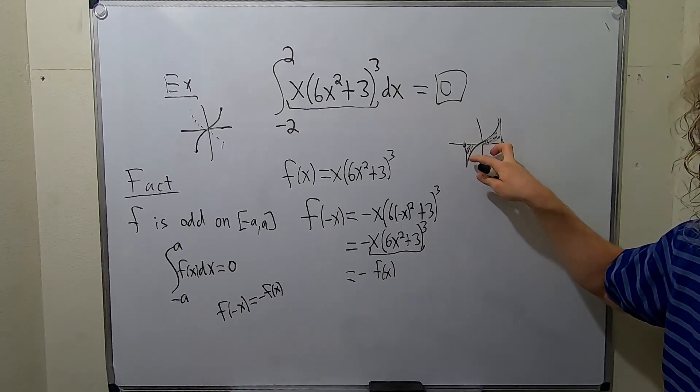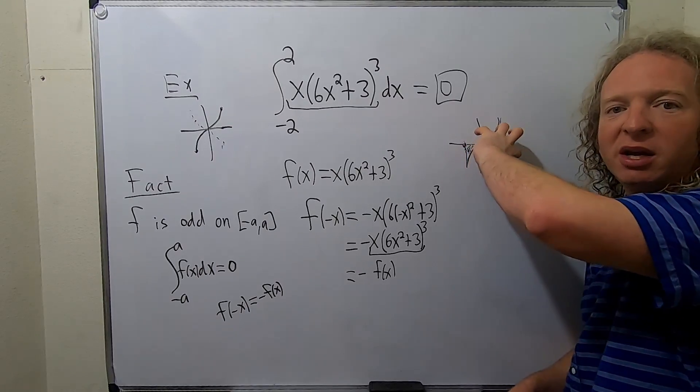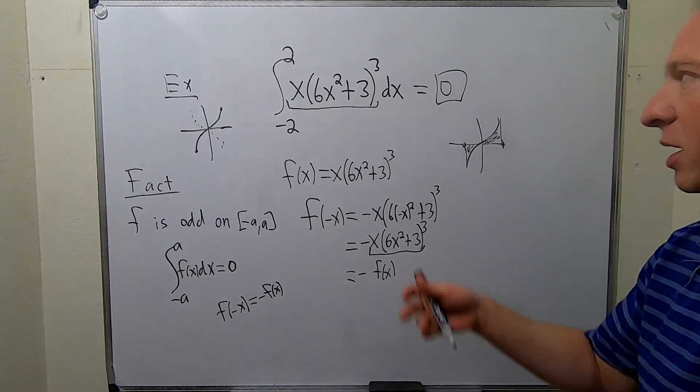So they cancel each other out when you integrate and you get 0. That's the idea. Because if this is positive 2, this is negative 2, and so it cancels when you integrate and that's why you get 0.